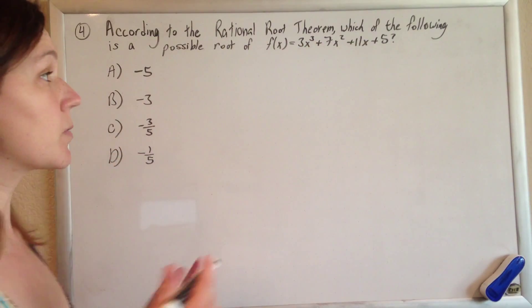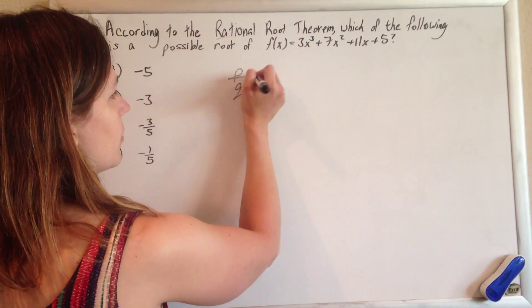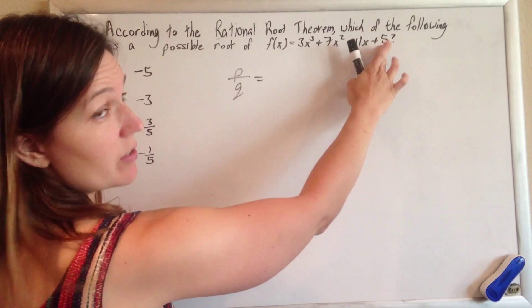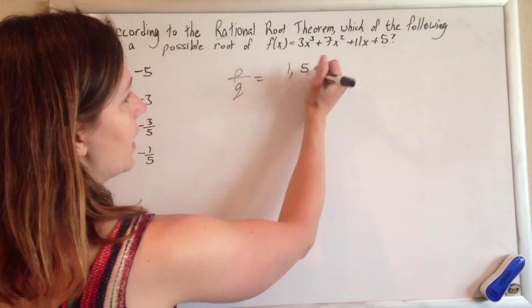So, from the Rational Root Theorem, we know that if this thing is to have rational roots, it has to be in the form p over q, where p is factors of this constant term, so factors of 5 are 1 and 5.